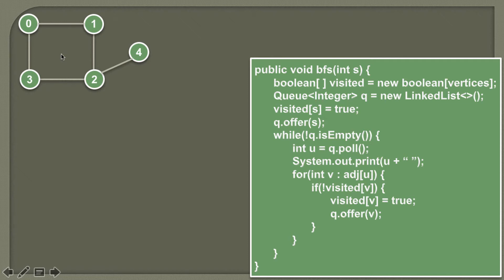Suppose we are given a graph of five nodes where zero, one, two, and three are connected by an edge, and four is connected to two by an edge. If we start from zero, then zero is at level one and will be visited first. From zero, nodes three and one are connected, so these both nodes are at level two and will be visited after zero.